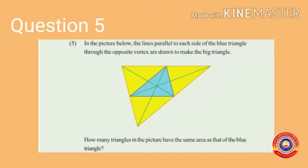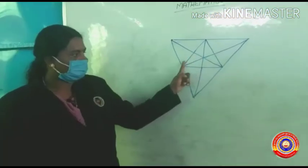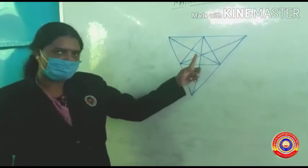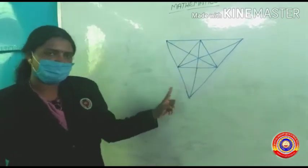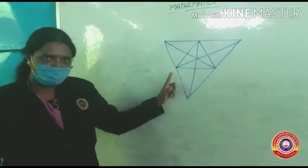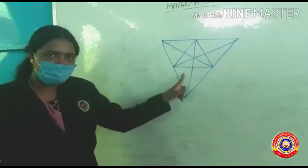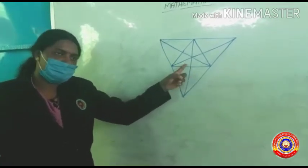Next, question number 5. In the picture below, the lines parallel to each side of the blue triangle through the opposite vertex are drawn to make the big triangle. How many triangles in the picture have the same area as that of the blue triangle? How many of them have the same measures as the blue triangle? Let's start the answer. Once again, how many triangles have the same area as that of the blue triangle, and how many have the same measures?